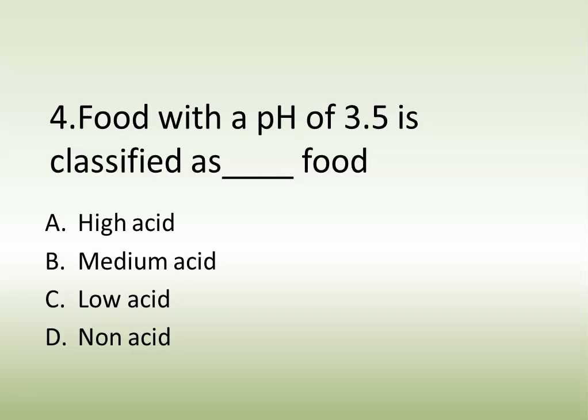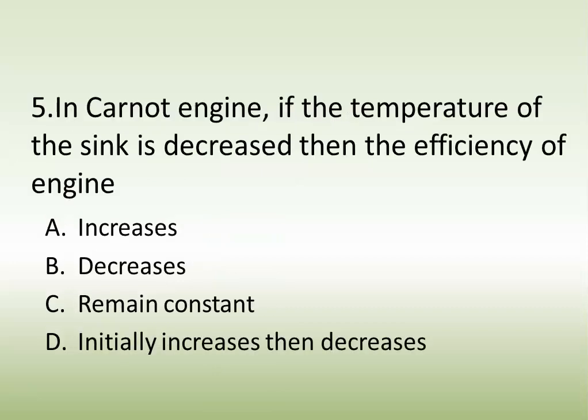Question number four: food with a pH of 3.5 is classified as what type of food. Options are: high acid, medium acid, low acid, or non-acid. The answer is high acid. Question number five: in a Carnot engine, if the temperature of the sink is decreased, then the efficiency of the engine. Options are: increases, decreases, remains constant, or initially increases then decreases. The correct answer is increases.